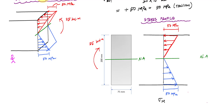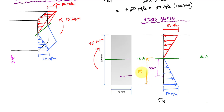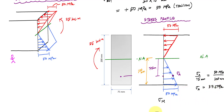For instance, if I wanted the stress at a point 75 millimeters from the neutral axis, I could plug back into the bending formula, or use ratios and similar triangles. This point is 75 millimeters from the neutral axis, and the full height is 100 millimeters. So sigma_a over 75 equals 50 MPa over 100 millimeters. This tells me sigma_a is 37.5 MPa in tension. I could do that for any point on the cross section.